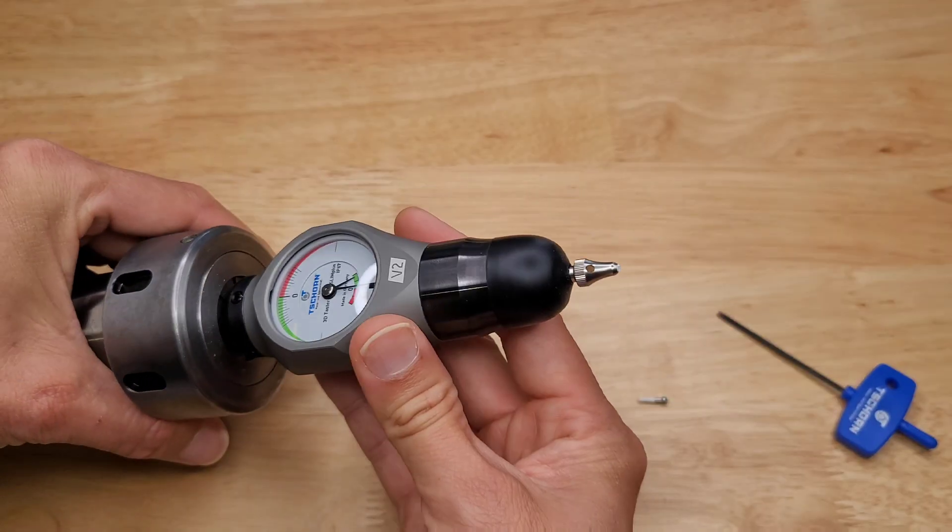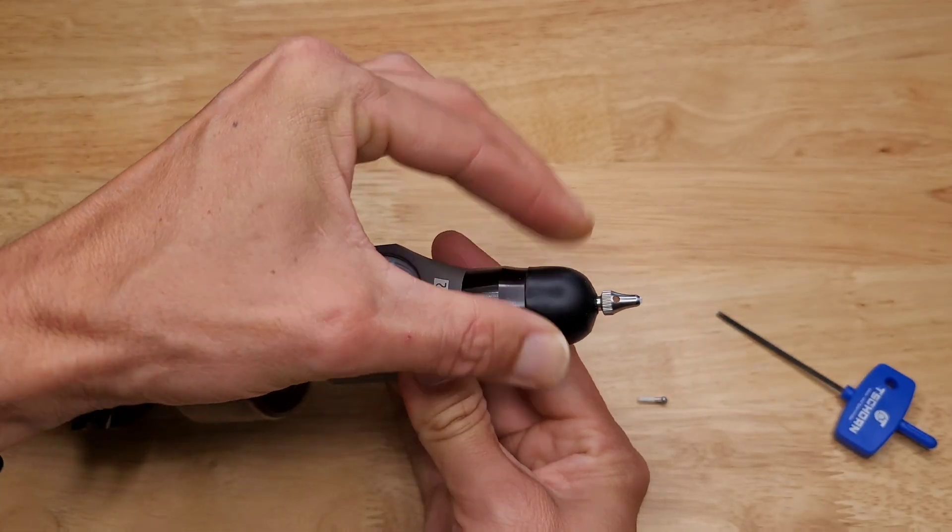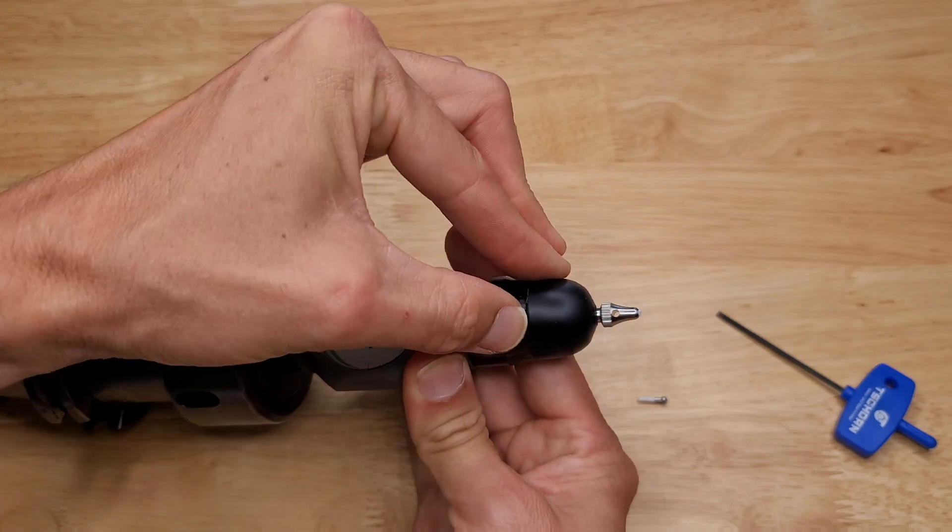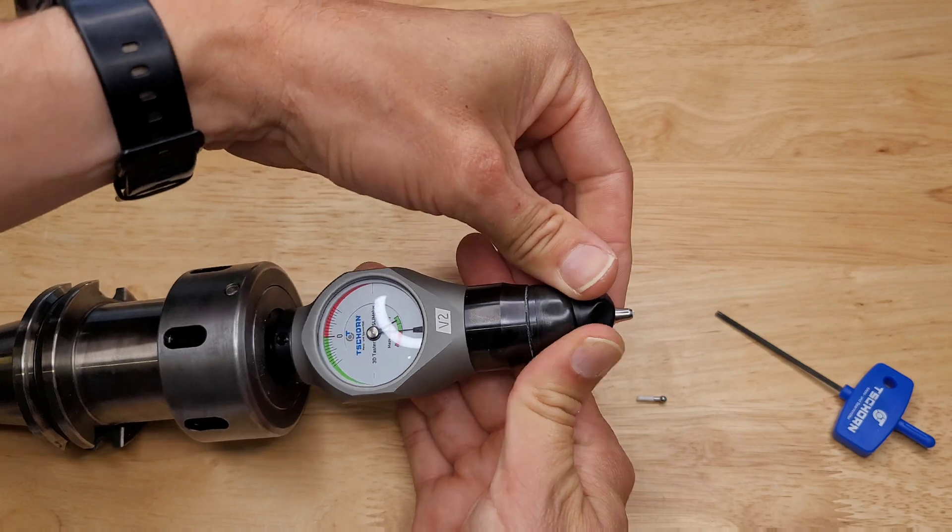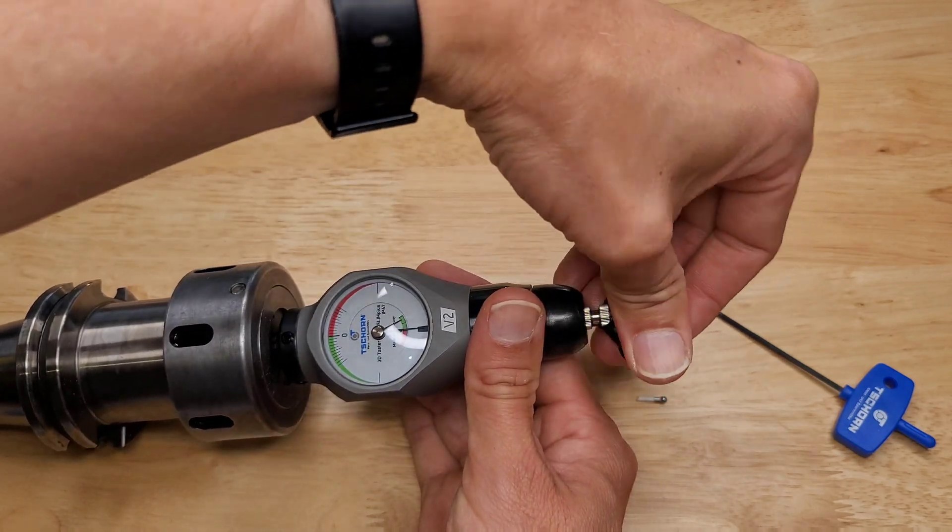The first step to replacing the tip is you've got to remove this rubber boot here. So you just squeeze that. It lifts up on one side like this, and then you can push it off and pull this carefully over the broken tip.